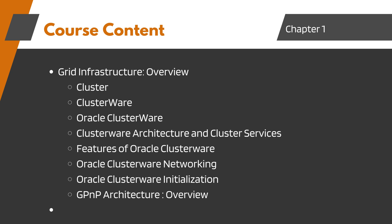Now these are the contents of Chapter 1. We will begin with an overview of grid infrastructure, highlighting its role in supporting high availability and scalability. Next, we will explore clusters and their importance in distributing workload and ensuring continuous availability. We will also discuss Oracle Clusterware, examining its architecture, key components, and how it enables clustering.